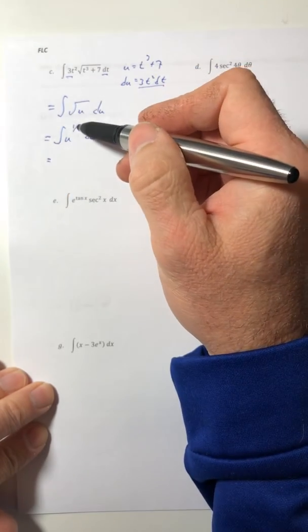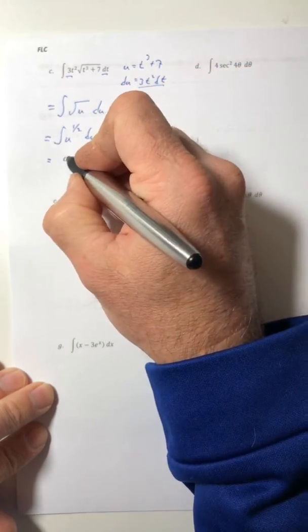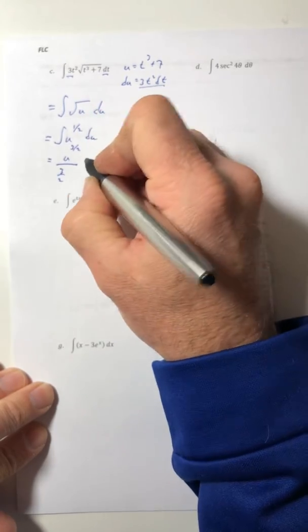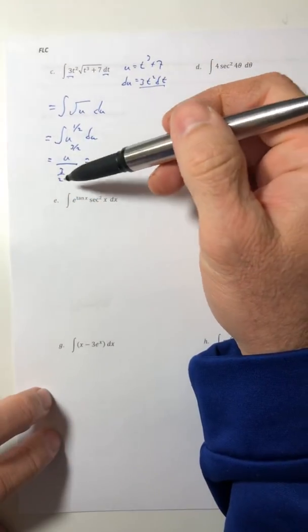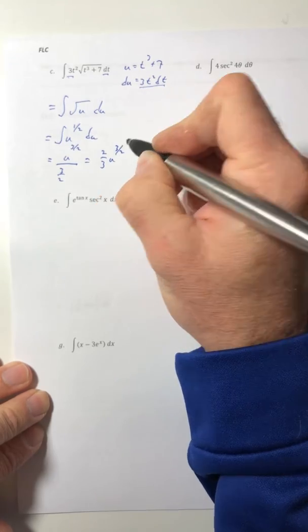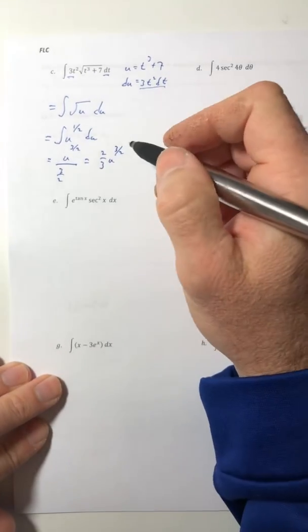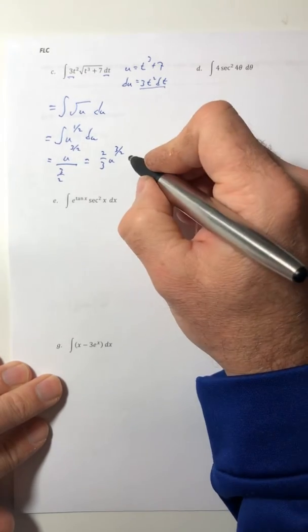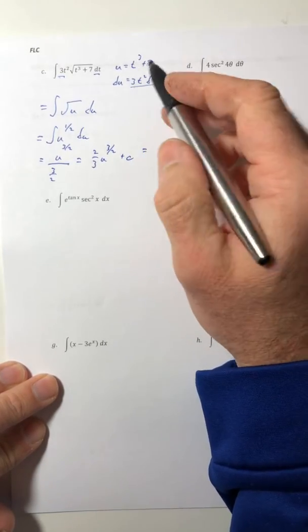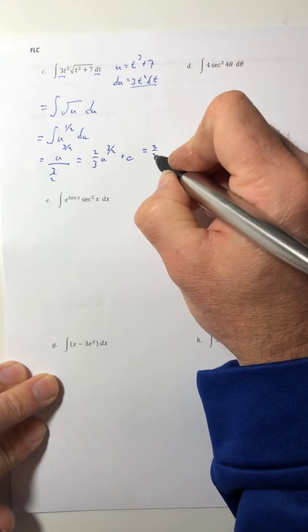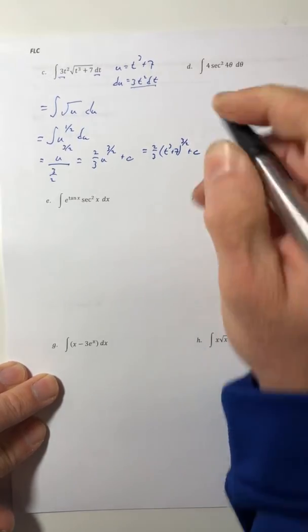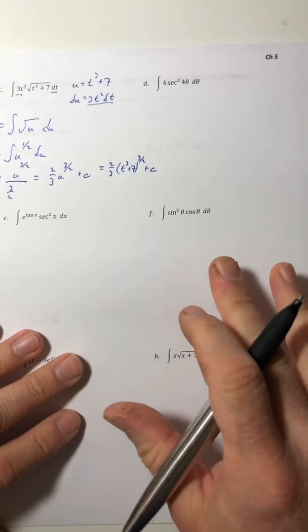And if you're integrating the square root of u, that's really the integral of u to the half. If you integrate this, you've got to increase the exponent by one, three over two, and then you're dividing by the new exponent three over two. Well when you divide by a fraction, it's the same thing as multiplying by its reciprocal, so two thirds u to the three halves plus c, and then switch it back into terms of t. So two thirds (t to the third plus seven) to the three halves plus c.